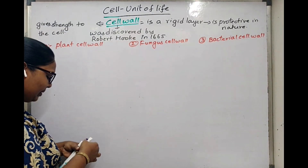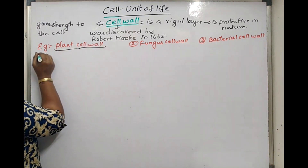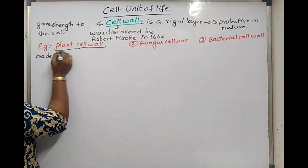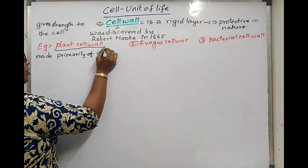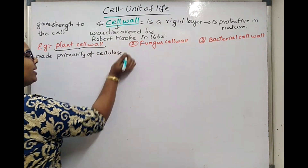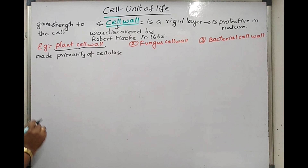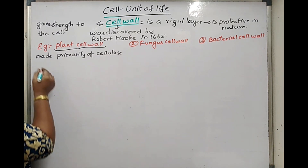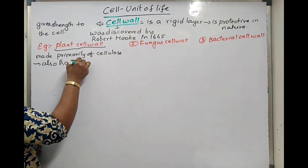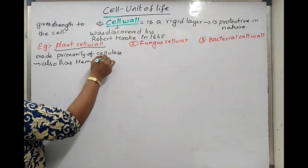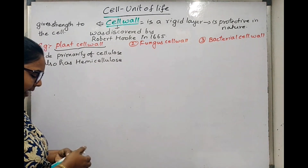Plant cell wall is made primarily of cellulose. But some types of plant cells also have another type of layer called hemicellulose. Both cellulose and hemicellulose are types of carbohydrates — polysaccharides.